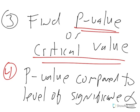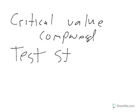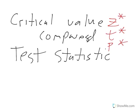Remember what alpha was — alpha was the tails of confidence intervals, so there is a relationship between hypothesis tests and confidence intervals. If you're going to do the critical value approach, a critical value is compared to the test statistic. Critical values were your Z-star, T-star, or P-star — the values you found in your confidence intervals.